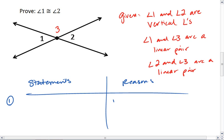Remember, our first statement is always our given. Here we have three givens. We have that angle 1 and angle 2 are vertical angles.